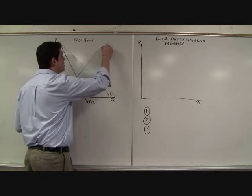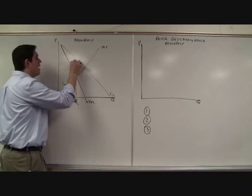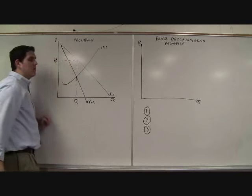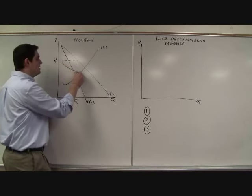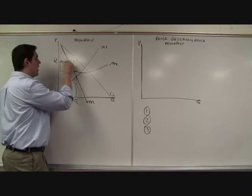Marginal cost looks like this. Go to where you produce where MR equals MC. There's your quantity Q1 and there's your price P1 for monopoly. Perfect. In fact I'm going to draw an ATC here. This one's making profit, an area right there. Perfect. Done.